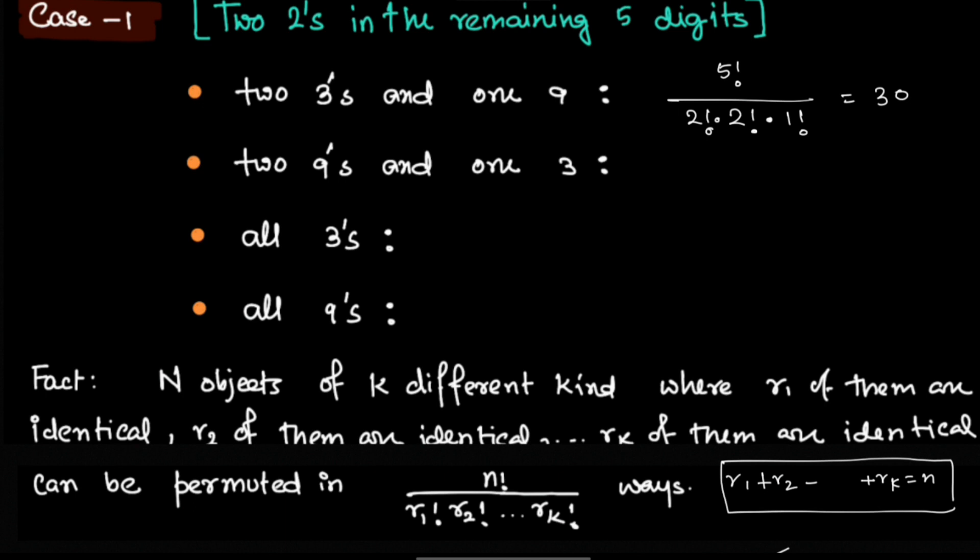For the next case it would be exactly the same thing because there are 2 identical 9s, 2 identical 2s, and one 3. So it would be 5 factorial over 2 factorial times 2 factorial times 1 factorial, which is 30 again.